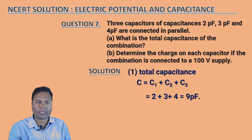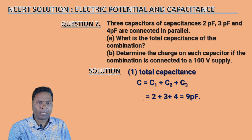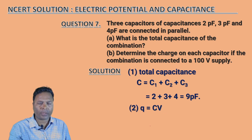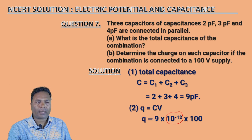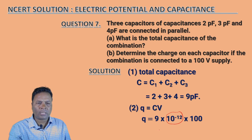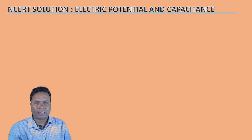In a parallel combination, the property is that the potential difference across all capacitors is equal, but the charge is different. The equivalent capacitance is 9 picofarad. Now we calculate the total charge: Q = CV = 9 × 10⁻¹² × 100, which gives Q = 9 × 10⁻¹⁰ coulombs.